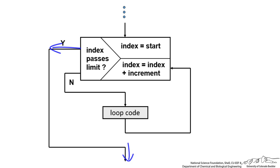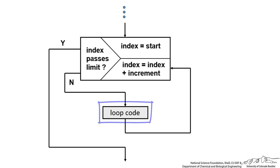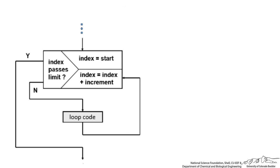When the index does not exceed the limit, we go into this inner loop where we do some sort of code — we do something inside of that loop — and then we increment the index by 1, and we keep going until the index passes that limit.